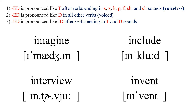Next one: IMAGINE. The stress is on the second syllable. This is an E ending, so we just put D to make it past. And this is an N sound, which is voiced. So we add D here and read: IMAGINED.